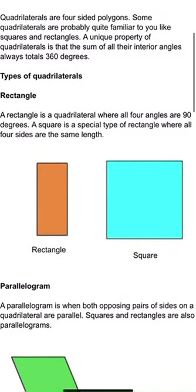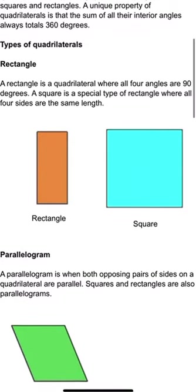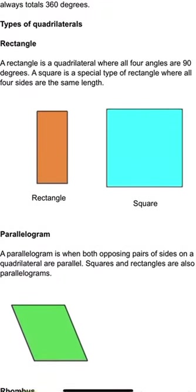Let's check out some types of quadrilaterals. For example, a rectangle. A rectangle is a quadrilateral where all four angles are 90 degrees. A square is a special type of rectangle where all four sides are the same length.